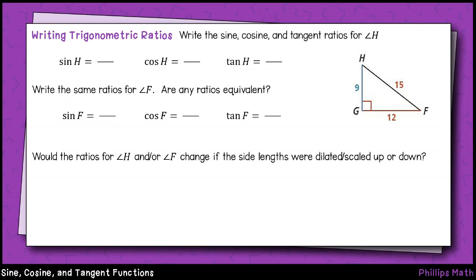Alright, let's go ahead and use our new functions. This section asks us to write the sine, cosine, and tangent ratios for the acute angle H. Well, according to our definition, the output for sine of angle H will be the opposite side divided by the hypotenuse. For this triangle, that'll be 12 over 15, which simplifies to 4 fifths.